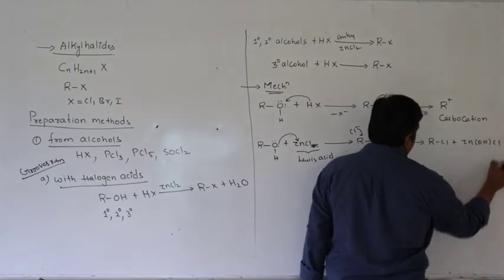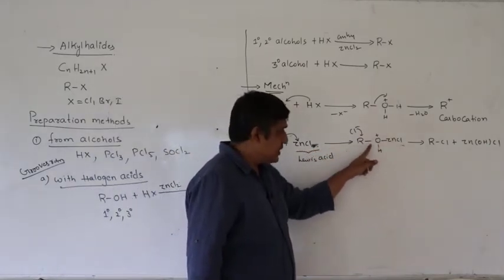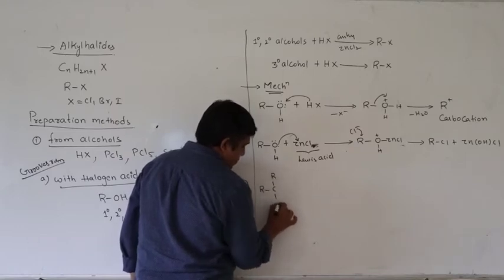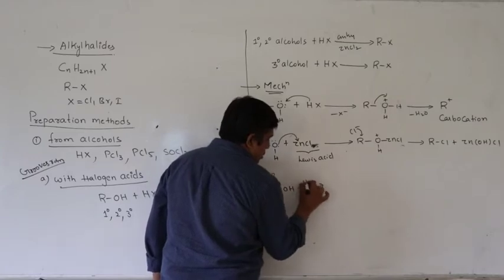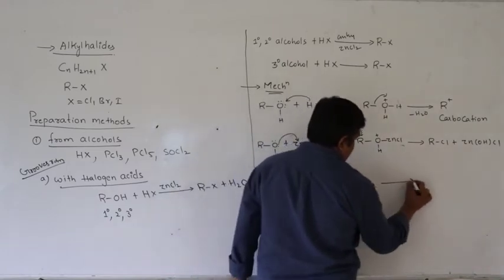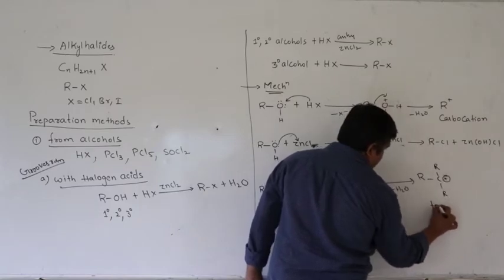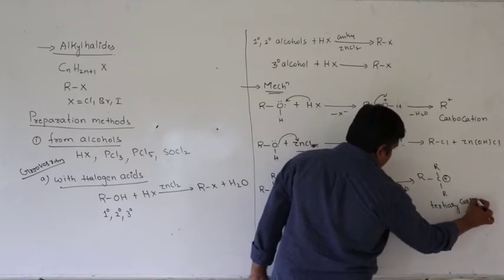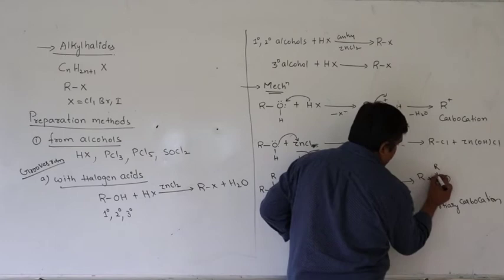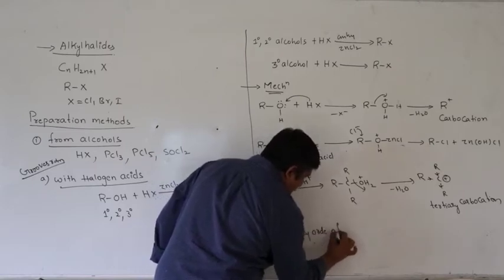We have Cl minus which removes to form RCl plus ZnOHCl. So zinc chloride helps in weakening the carbon-oxygen bond. Now in the case of a tertiary alcohol, protonation readily takes place, water is lost, resulting in the formation of a carbocation — specifically a tertiary carbocation, which is more stable than a primary or secondary carbocation because of the inductive effect of three alkyl groups.